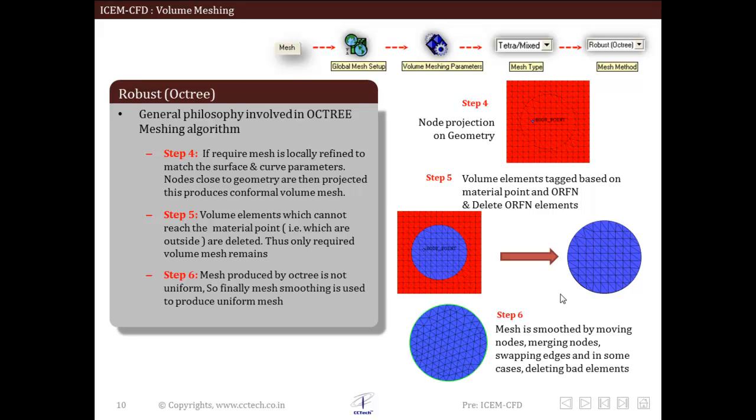Volume mesh produced using octree can be distinguished from other types of meshes by block-like arrangement of tetras. Robust octree produces low quality volume mesh. This is due to the projection of nodes on the geometry as mentioned in step 4, which creates low quality elements near the surface.